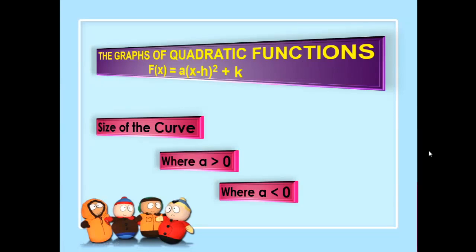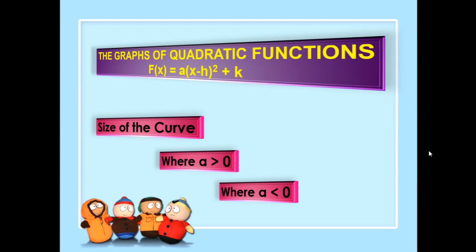This time we are going to discuss the graphs of quadratic functions defined by f(x) equals a times the square of the difference x minus h plus k. We are going to study and observe the size of the curve where a is greater than 0 or a is less than 0.